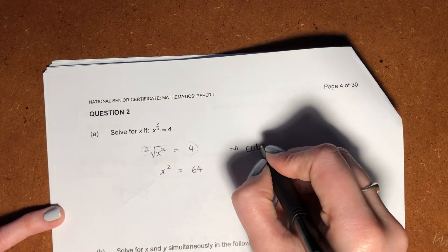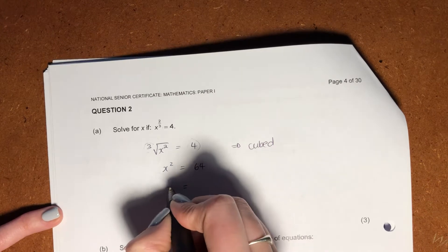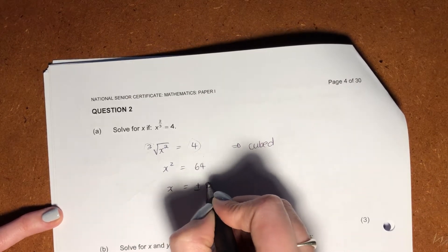So what have we done here? We've cubed both sides. Now we need to root it. And then x is going to become plus minus 8.